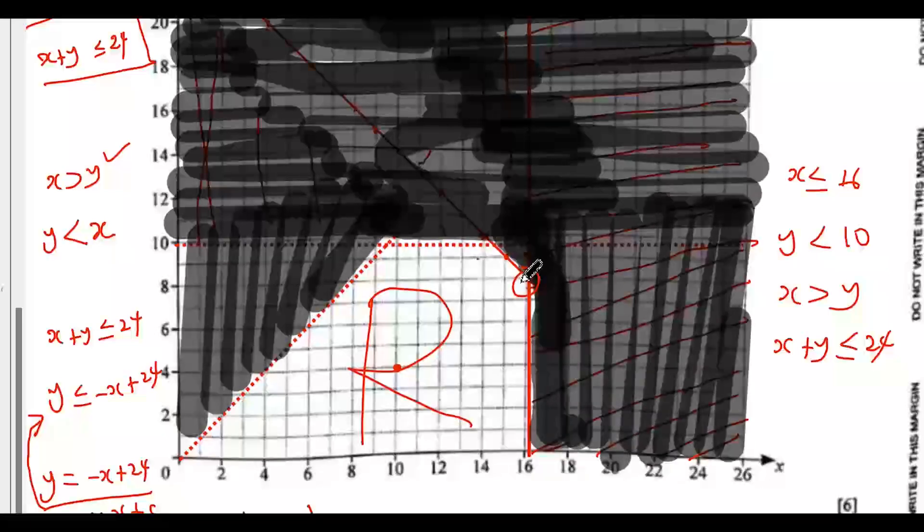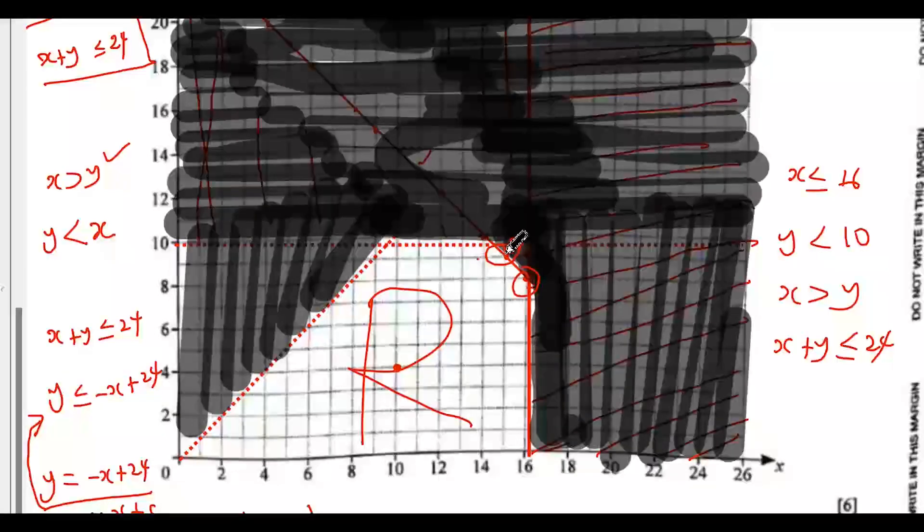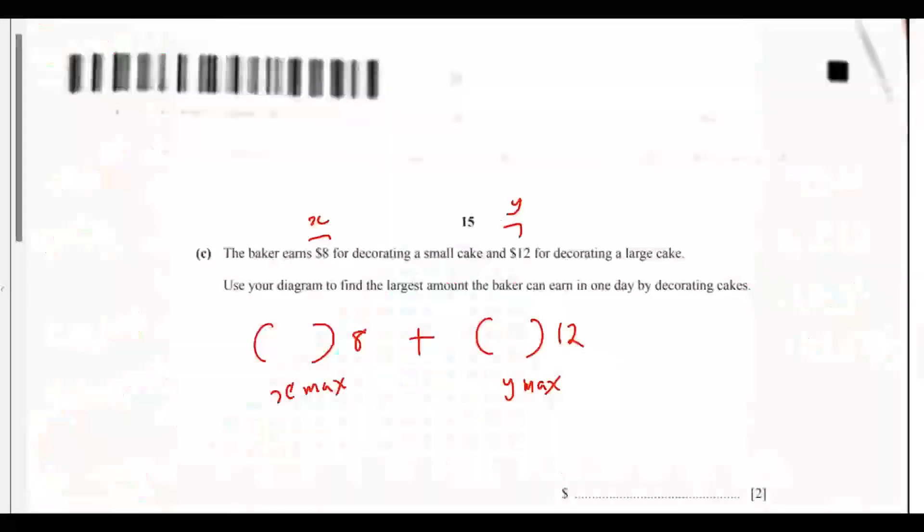But if you look at the values, this is one point, then another point is this. That is x equals 15. So between this and this, which one should we pick? If you look at this, the value of x here is 16 but y equals 8. If you look at the other one, the value of x is 15. This is a better option because this will give us a larger number. So the maximum value of x is 15, and the maximum value of y is 9.